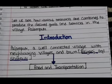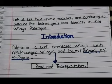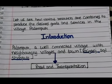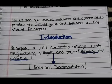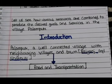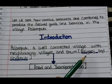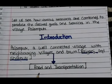Let's start the chapter. Palampur is a well-connected village with neighboring villages and towns — Raiganj and Shahpur. Palampur is like any normal village with connectivity to its nearby towns. The neighboring towns are Raiganj and Shahpur, and they are well connected through roads and transport — permanent all-weather roads.